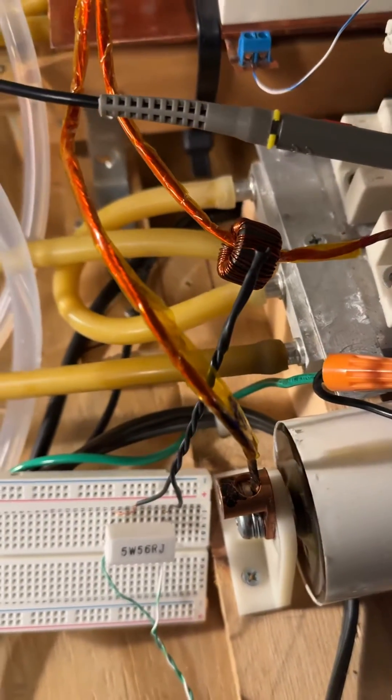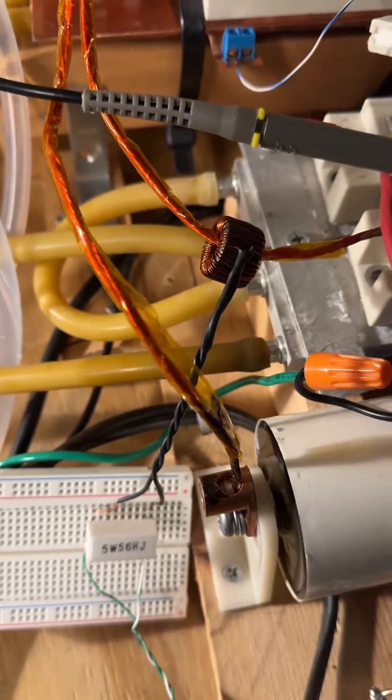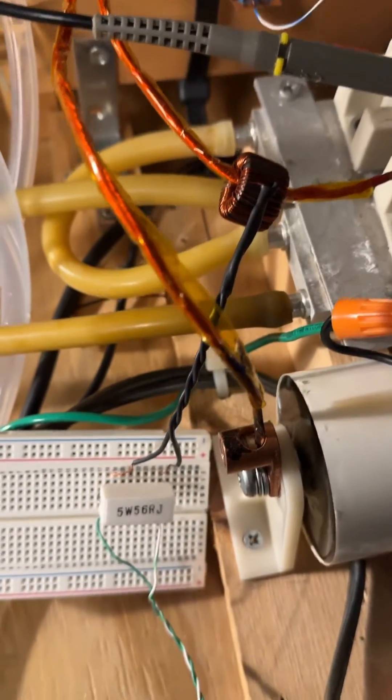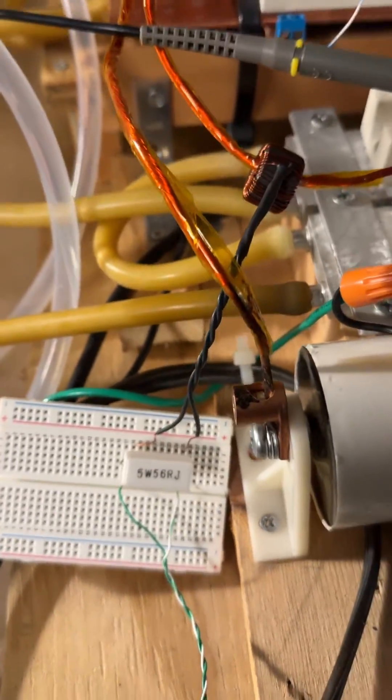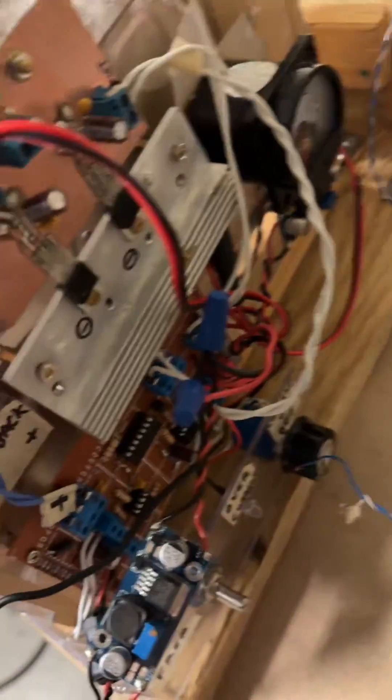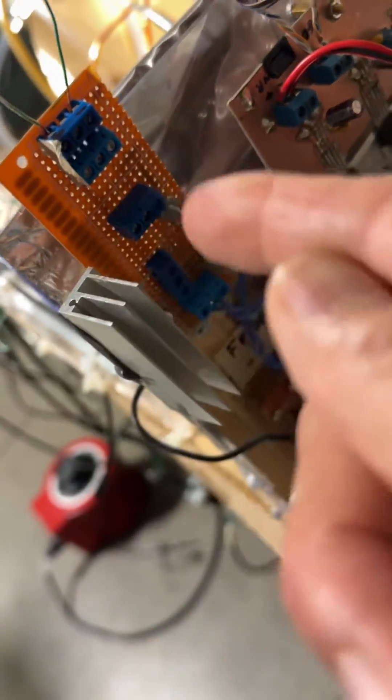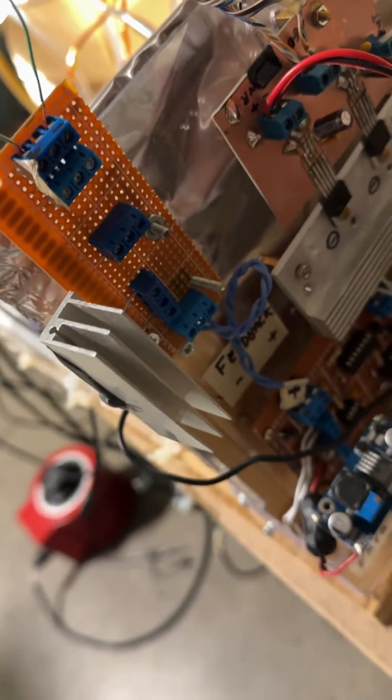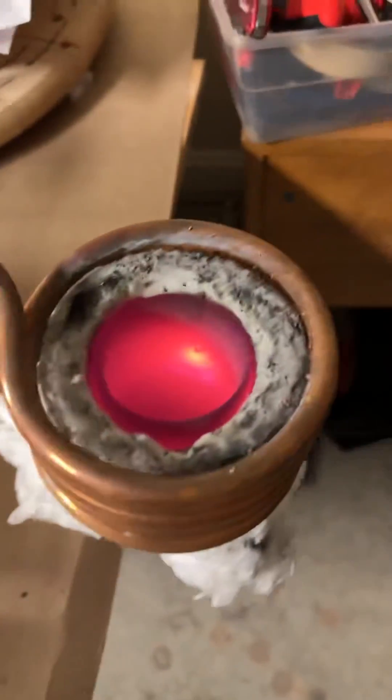I'm using a 40-turn ferrite toroidal current transformer and putting that right into the feedback. I got rid of all the burden resistors off the feedback right here, just unscrewed them all.